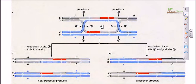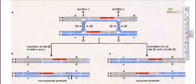In the Holliday junction model there is only one spot for cleavage. In this DSB model, if we cleave from the second place in both ways, or from the first place in both ways, it will produce non-crossover products — one of the DNAs will have one conserved DNA strand. But if we cleave one end from site one and the other end from site two, or vice versa, it will generate crossover products — in which there will be no conserved DNA strands in any of the DNAs.